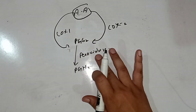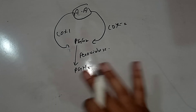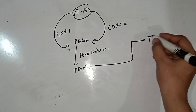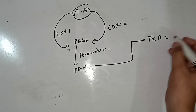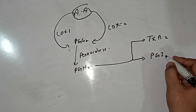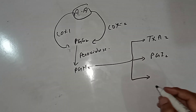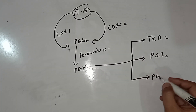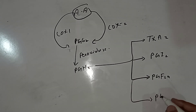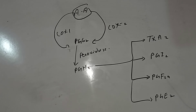Prostaglandin H2 (PGH2) is then converted into thromboxane A2, prostaglandin I2, prostaglandin F2-alpha, and prostaglandin E2. We need not go into the details of the enzymes involved in these conversions, but we should know their individual roles.